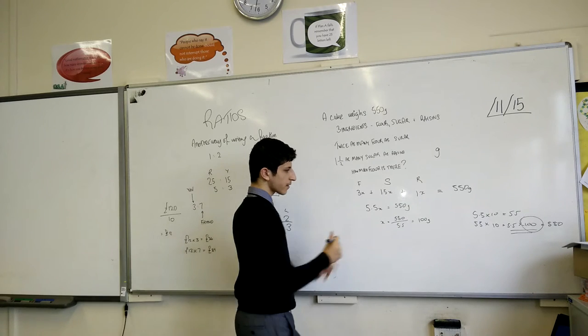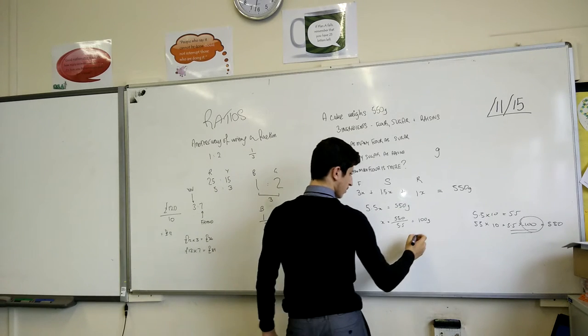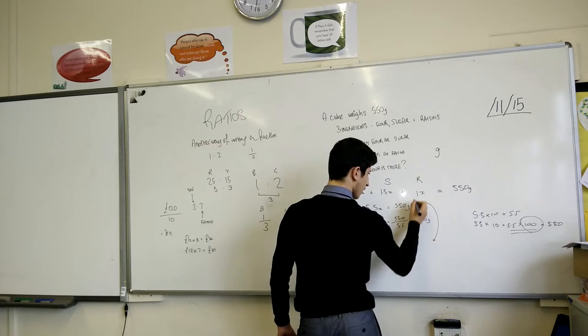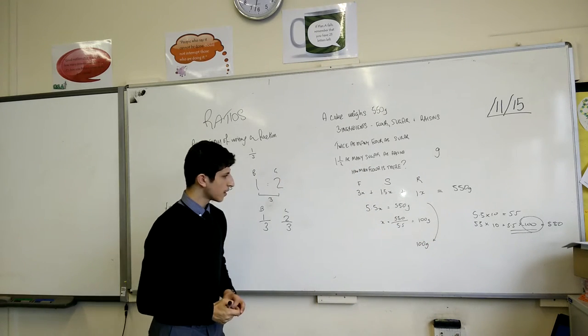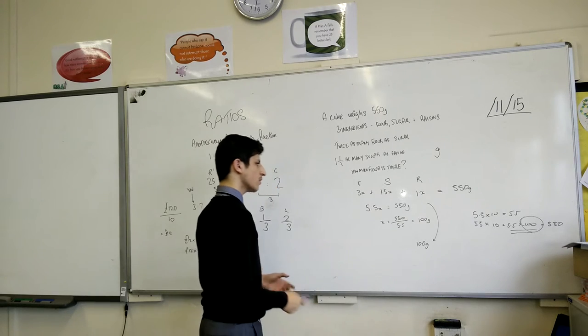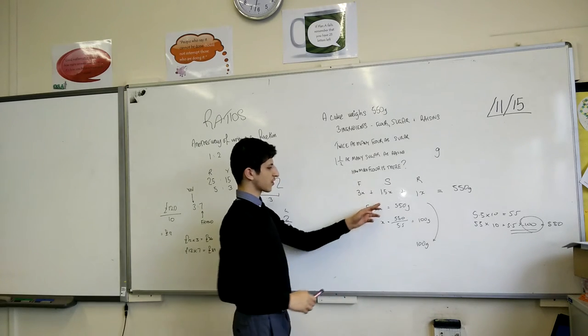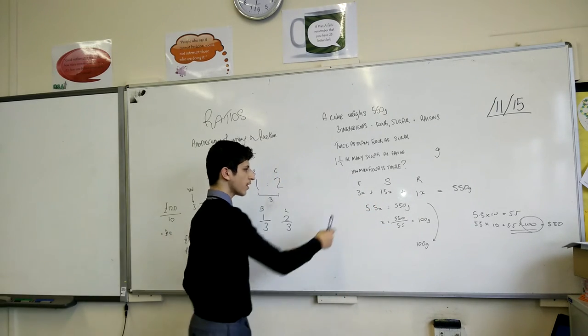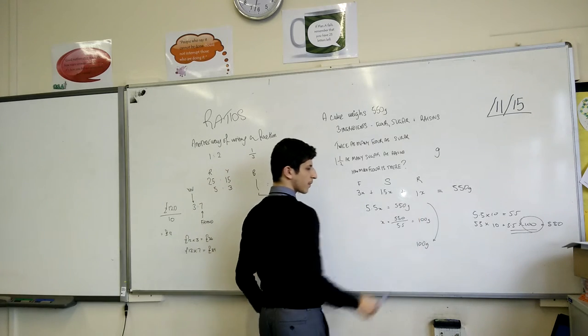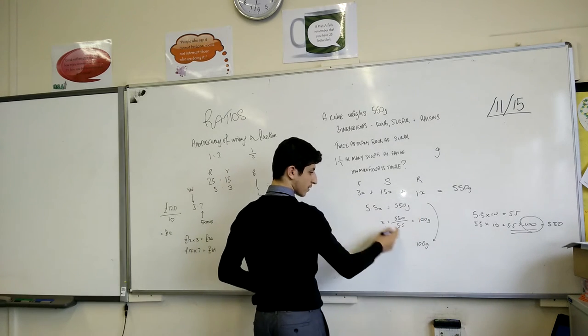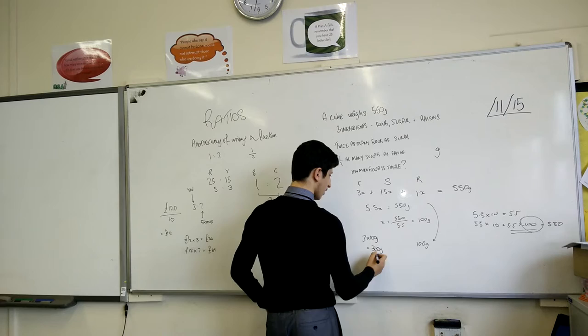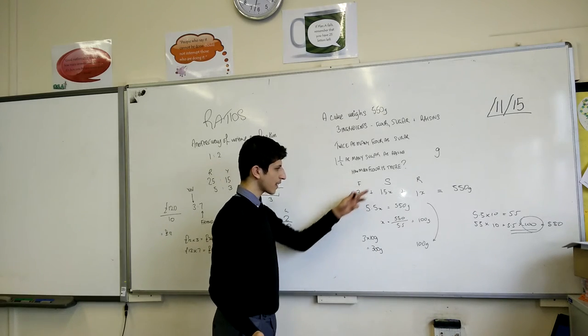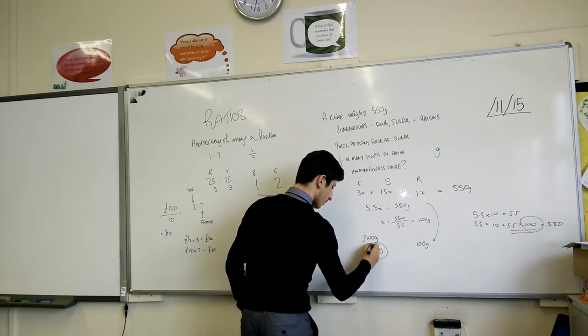So, you know that x is raisins, so you know that you have 100 grams of raisins. Normally, what you could do is you could figure out the amount of sugar and then the amount of flour. But you already know that flour is 3 times the number of raisins. Very simply, 3 times 100 grams equals 300 grams. If I answer the question, how much flour is there? The answer is 300 grams.